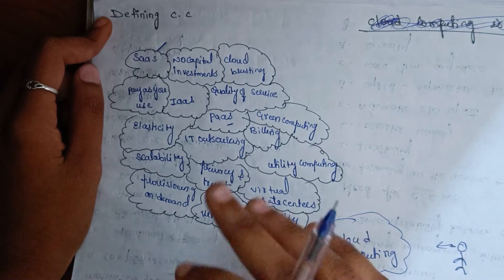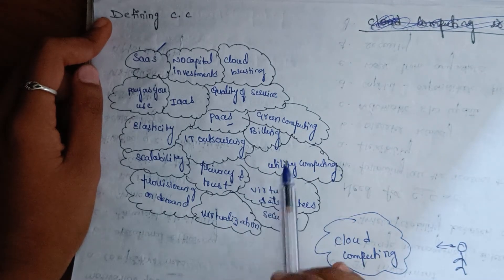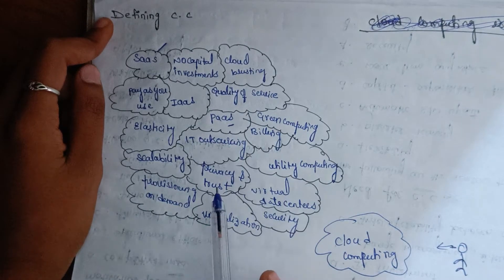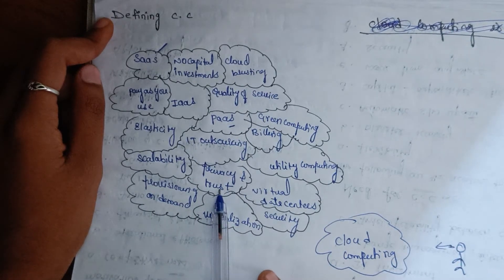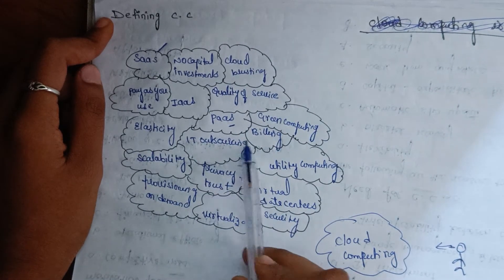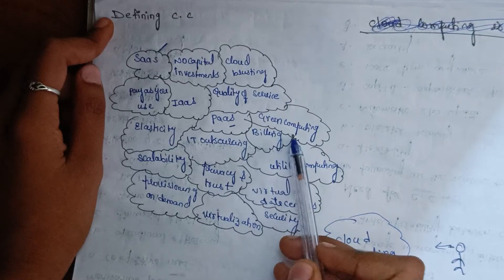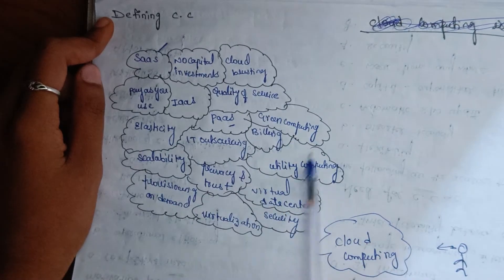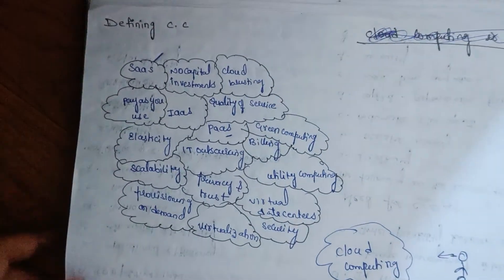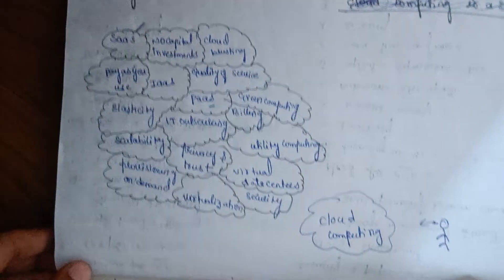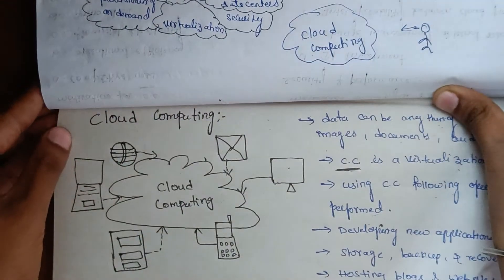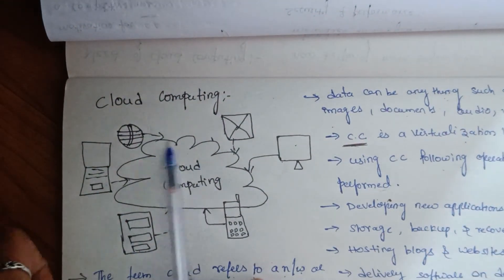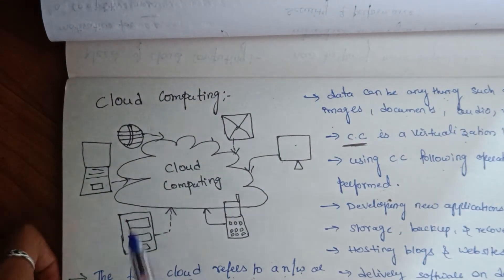So that is cloud computing. We have virtualizing, privacy, trust and IT outsourcing, billing, green computing, and quality of services — these are all aspects to consider before we choose cloud computing.